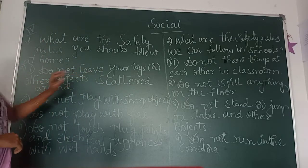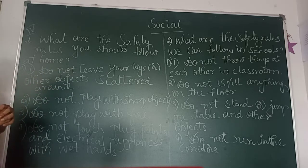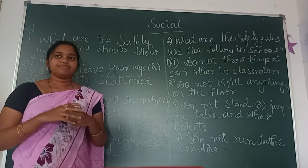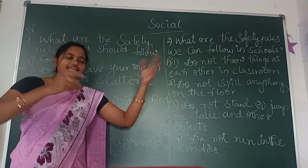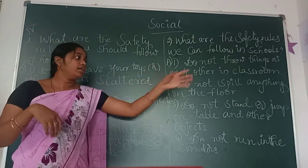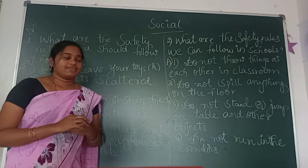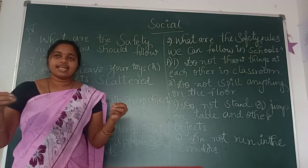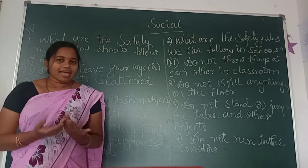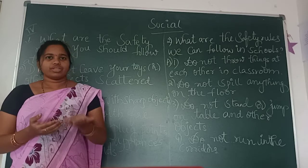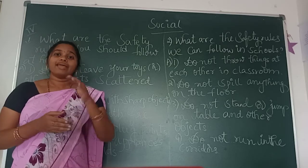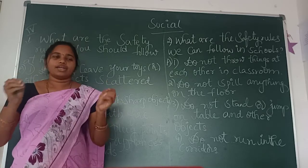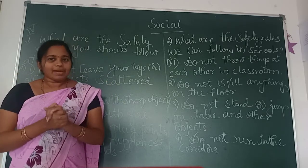Do not leave your toys or other objects scattered around. You know, children, some children will play with toys and then leave them scattered around — they throw their toys and go another way. So don't do like that. If you scatter things, sometimes your father or your friends may fall or bump into the toys. So don't scatter them; always keep things in their place.